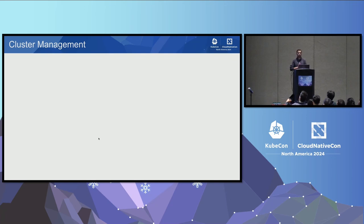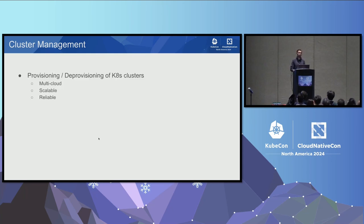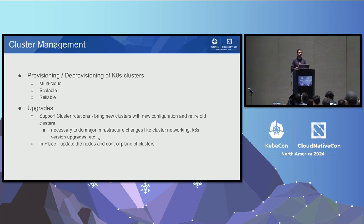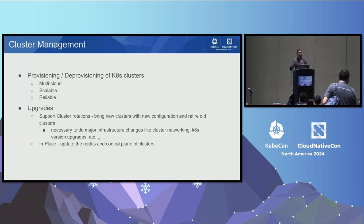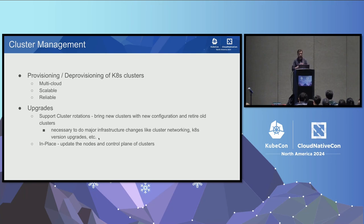In order to scale our serverless compute, we really need to scale our cluster management. By cluster management, I mean these operations: the first is provisioning and deprovisioning of our Kubernetes clusters — it should be multi-cloud, scalable, and reliable. The second operation we do very commonly is upgrades. We support two kinds: cluster rotations, where we bring in a new cluster with new configuration and retire the old ones — necessary for major infrastructure changes like network updates or major Kubernetes version upgrades — and in-place upgrades, where we update the nodes and the Kubernetes control plane. My talk will focus on provisioning, deprovisioning, and cluster rotation upgrades.